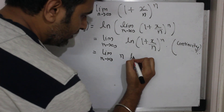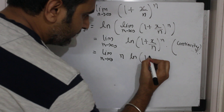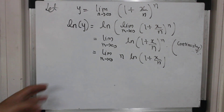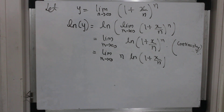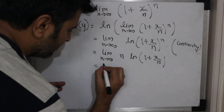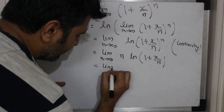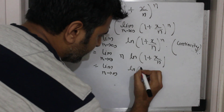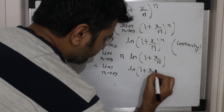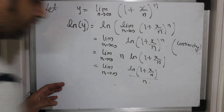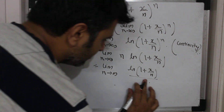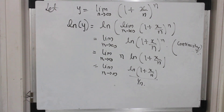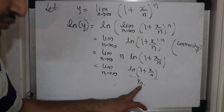So because of this theorem, you can take n out ahead: this is n times ln of (1 + x/n), and now you can write your n as limit n going to infinity of ln(1 + x/n) divided by (1/n). Now as n goes to infinity, 1/n goes to 0.